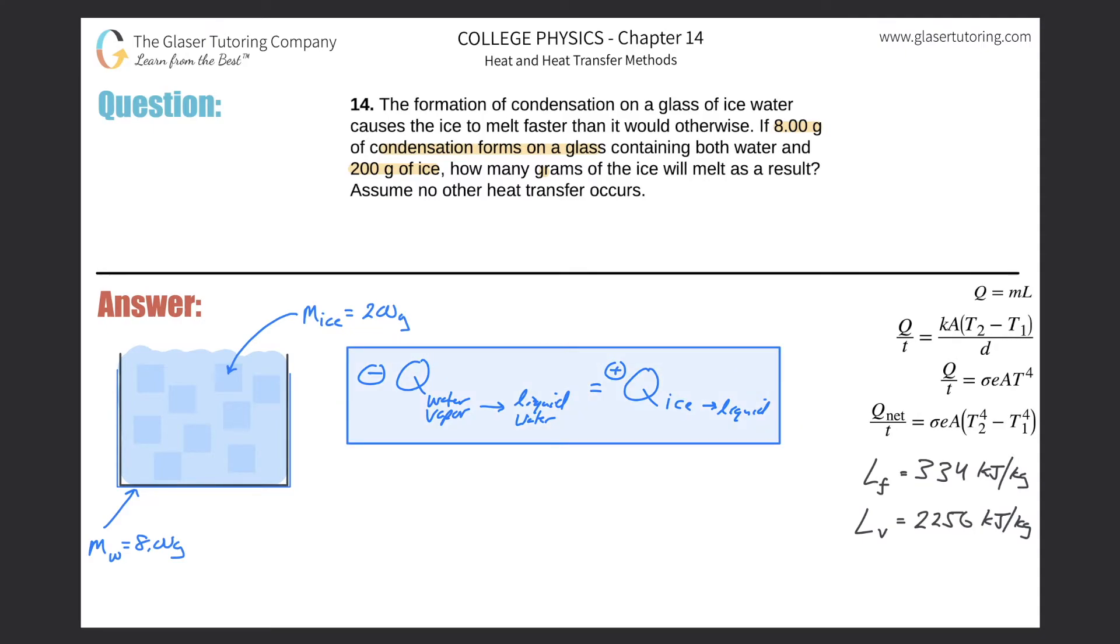Now, what do we know? Well, we know that we are dealing with eight grams of water that has condensed on the glass. So that means if I were to expand these two equations now, I could say that this is the mass of the water that condensed multiplied by the latent heat of vaporization, because that is the constant for condensation, will equal then the mass of the ice that has melted multiplied by the heat of fusion.